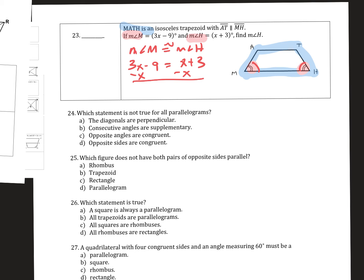It's that easy. So then you get 2x minus 9 equals 3. And 2x is equal to 12. Divide by 2, and I get x equals 6.